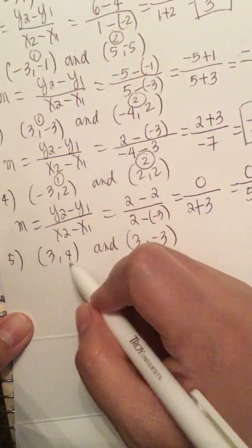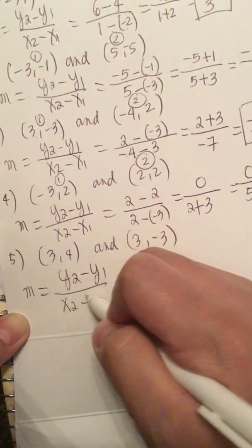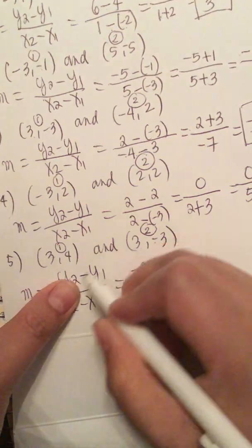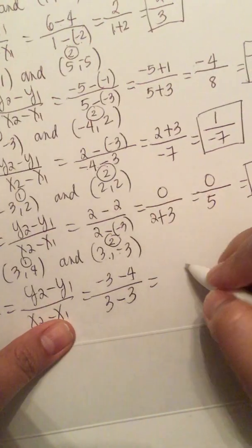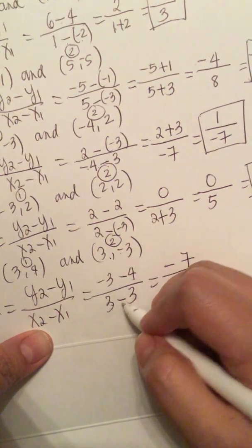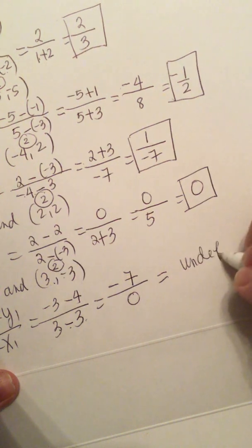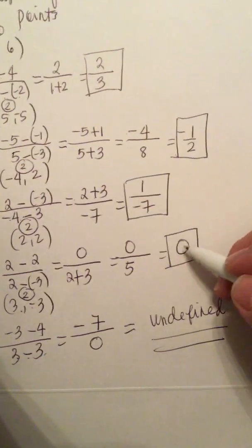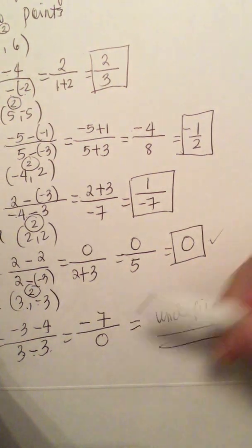The last one: we have (3, 4) and (3, -3). So m equals y2 minus y1 over x2 minus x1. Labeling point 1 and point 2, y2 minus y1 is -3 minus 4, which equals -7. And x2 minus x1 is 3 minus 3, which equals 0. So -7 over 0 is undefined. That's how you do slope. A slope of 0 is a valid slope, but 0 in the denominator means the slope is undefined.